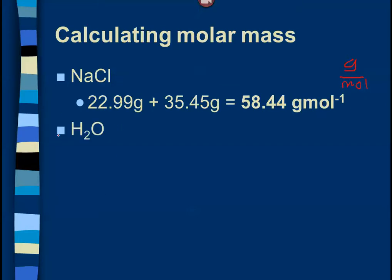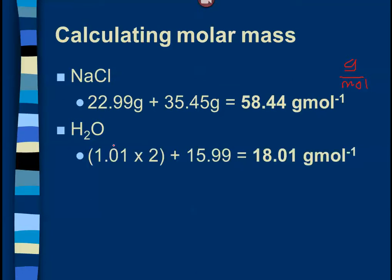Another example: H₂O. You're going to use the molar mass of water a ton — you'll probably end up memorizing it. The only thing to remember is to account for the subscripts. Hydrogen's mass from the periodic table is 1.01 — multiply that by two. Plus 15.99 for oxygen. You could round oxygen to 16; it wouldn't be a big deal. Either way, we're going to get 18.01 when we add that up.